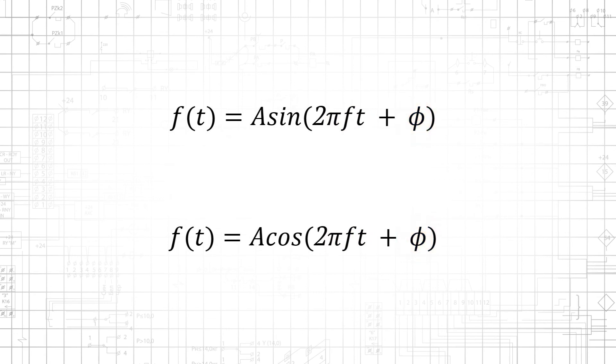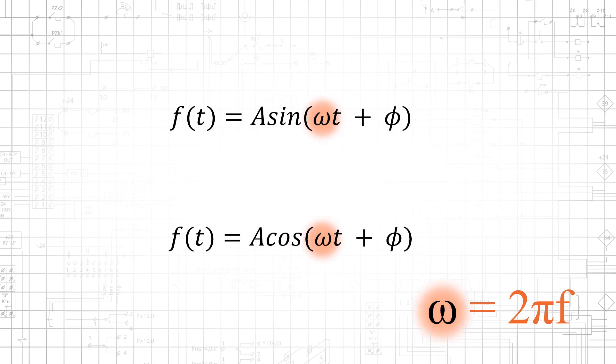The independent variable is time, denoted by t. The quantity 2 pi f is equal to the angular frequency, which is denoted by the Greek letter omega, and this substitution is often made to simplify the formula.